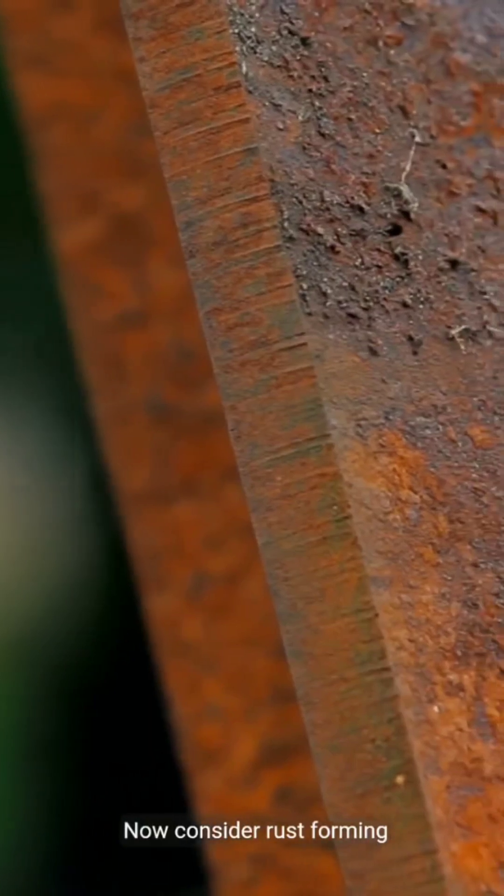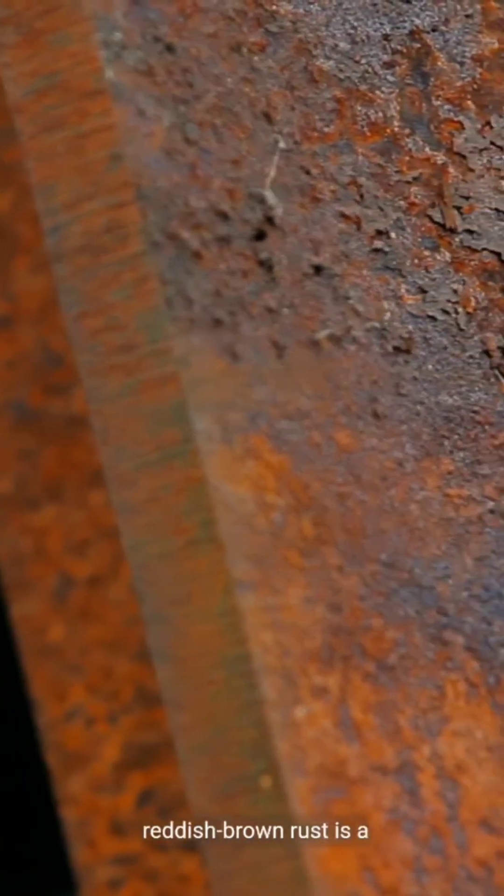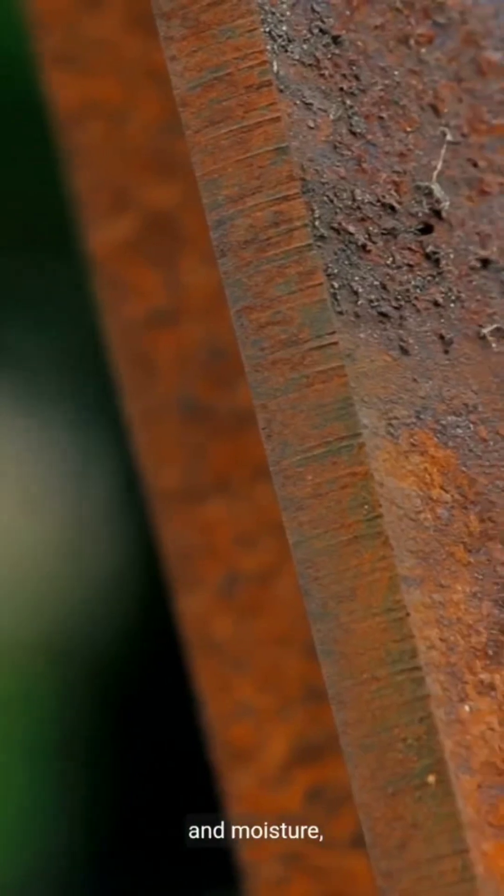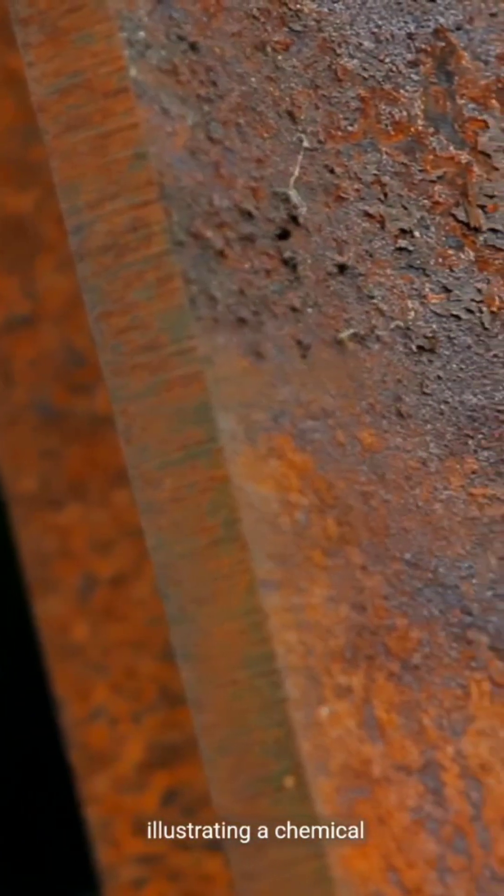Now consider rust forming on iron. The reddish-brown rust is a new substance formed from a reaction between iron and moisture, illustrating a chemical change.